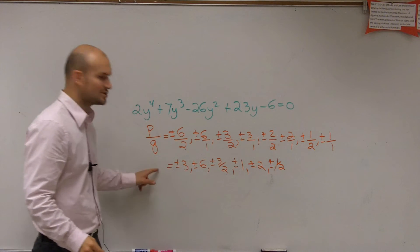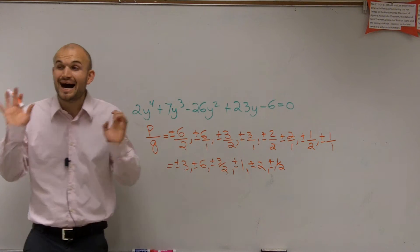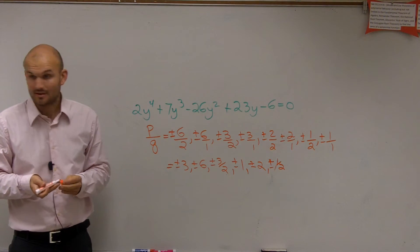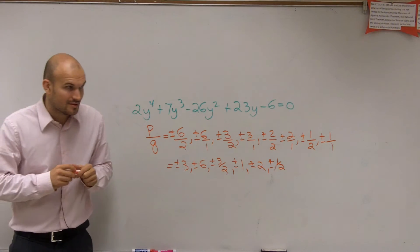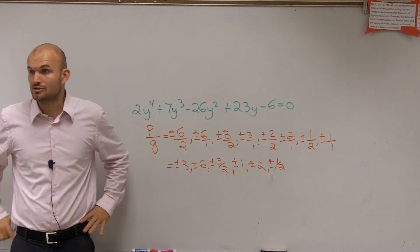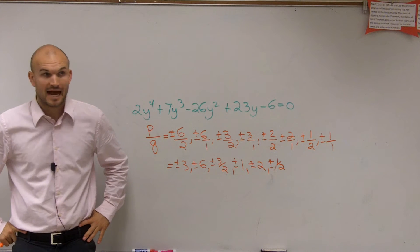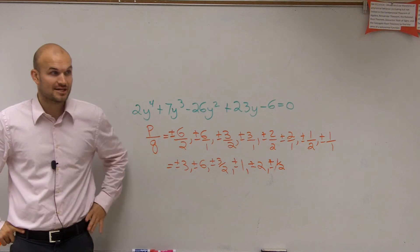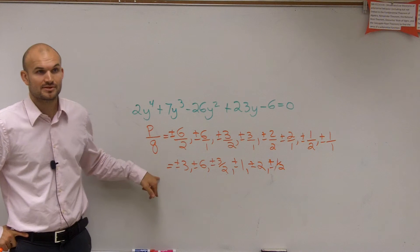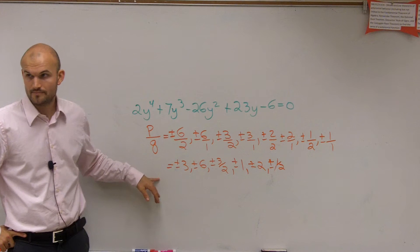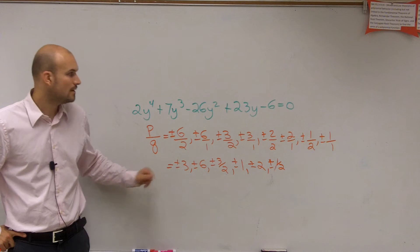So that's all. This is your solution set for all of your possible rational zeros. Possible. I don't know if any of these are your solutions or not. I just know if you're going to have a rational zero as your zero, it's going to be one of these numbers.